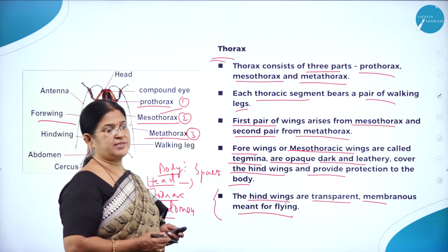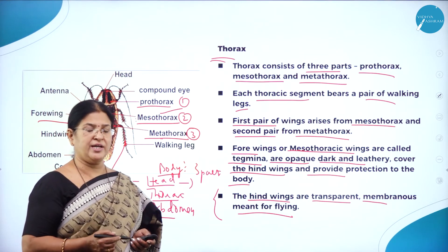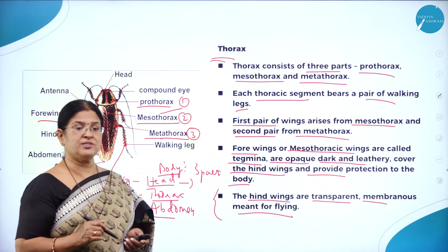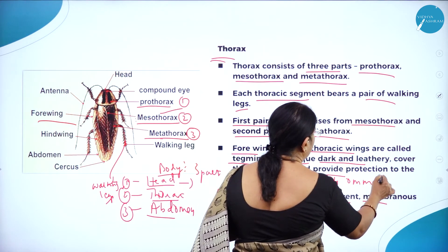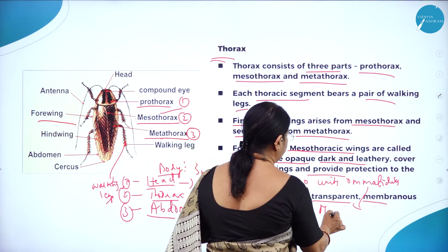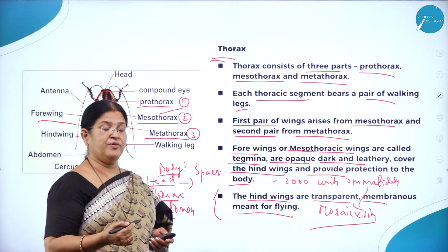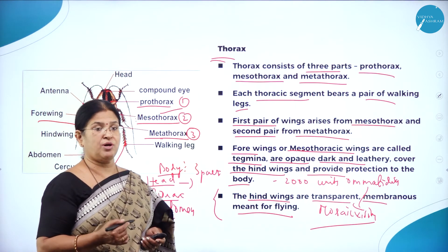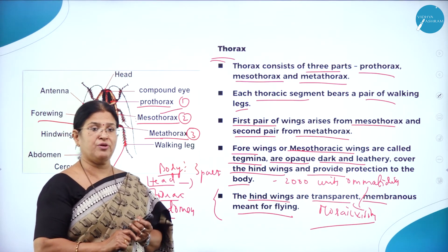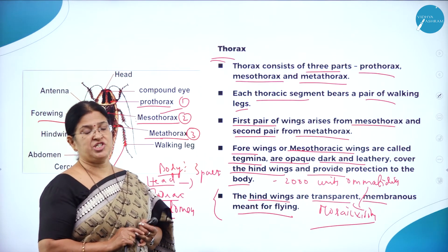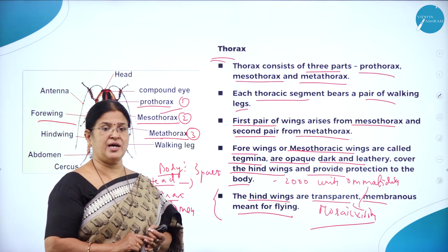The thoracic region: the whole body is divided into head, thorax, and abdomen. The head region has antennae and compound eyes — the compound eye is made up of about 2000 units called omatidia, responsible for mosaic vision. This allows the cockroach to see during night time. Our eye is called a simple eye. The head contains antennae for sensing the environment, compound eyes for vision, and unique trophic structures: labrum, labium, mandibles, maxillae, and hypopharynx.